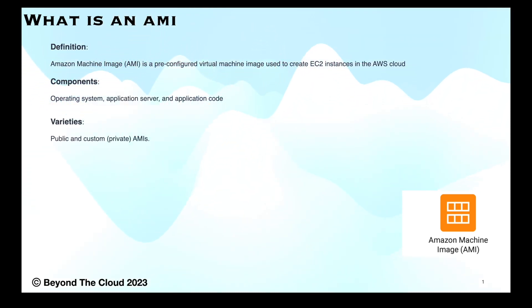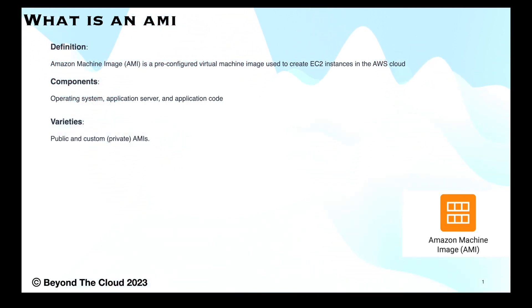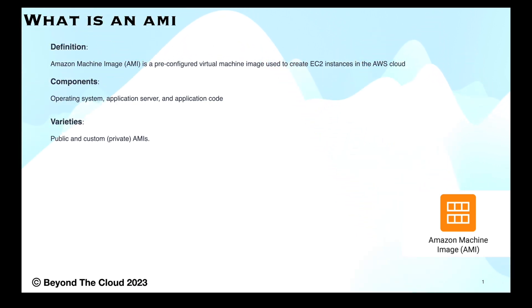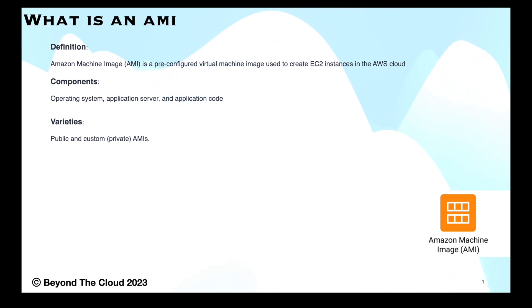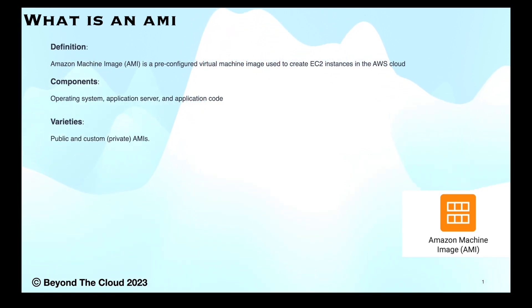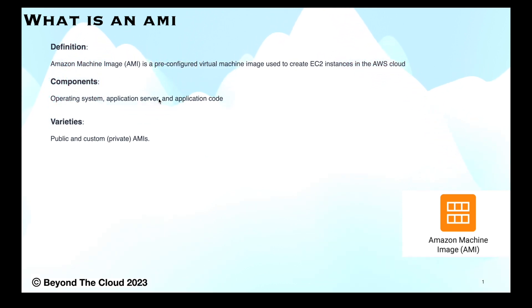An AMI can be a public AMI, a private AMI, or our own custom private AMI. The public AMI is one that has been shared broadly for launching EC2 instances. The private AMI is the one that enterprises mostly use — they have a pre-configured or hardened AMI of their own, share it across the organization, and users launch instances from that particular AMI. AMIs have a couple of core components: operating system, application server, and application code.